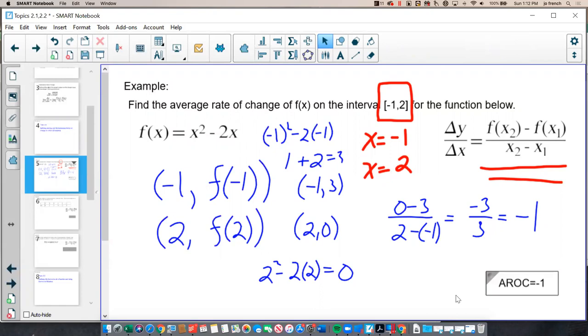So when I have an equation and they give me the x values, I plug them in to complete the points I need to use the average rate of change formula.